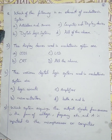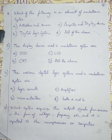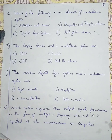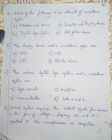Question number 2: Which of the following is an element of the mechatronics system? Option A is actuators and sensors. Option B is digital logic system. Option C is computer and display devices. Option D is all of the above. Actuators and sensors, digital logic systems, and computer and display devices are all elements of the mechatronics system. So the answer is option D, all of the above.